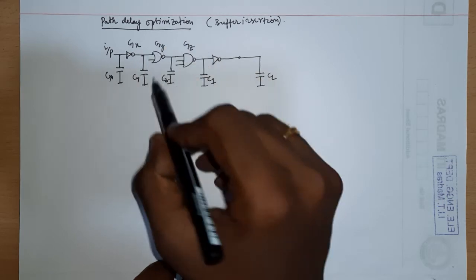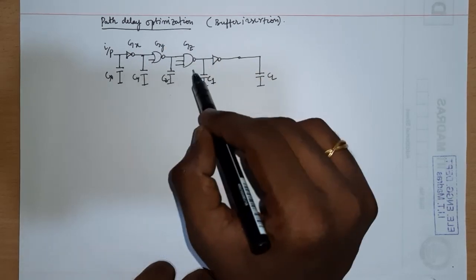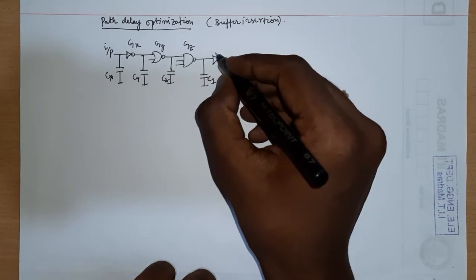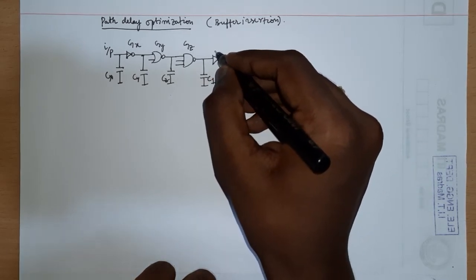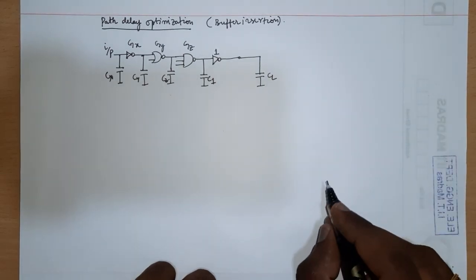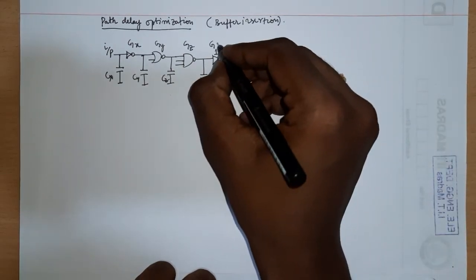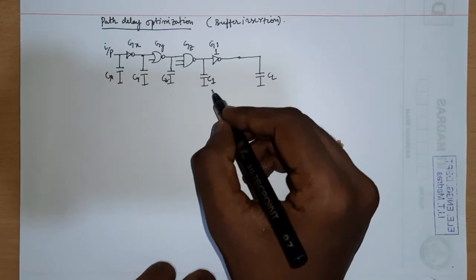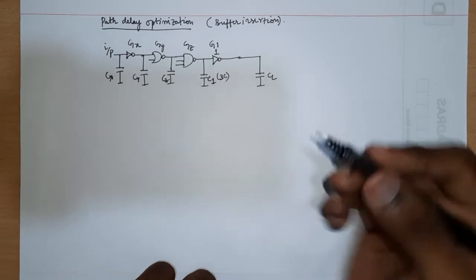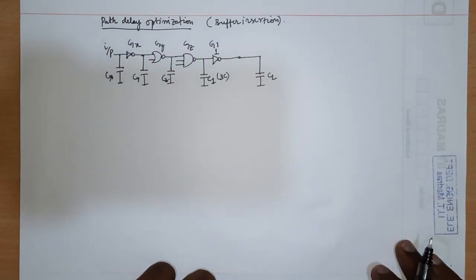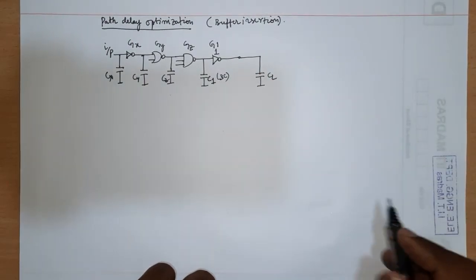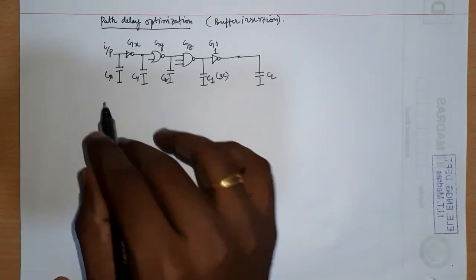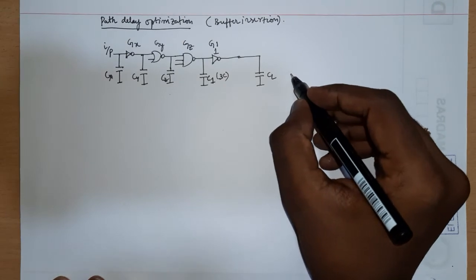Since I specify the capacitances, I need not actually specify the gate sizes, but for discussion purposes let me specify this is a unit-size inverter — size one — which is gate one. Gate one is a size-one inverter, and the input capacitance of gate one is C1, which is obviously 3C because it's size one.